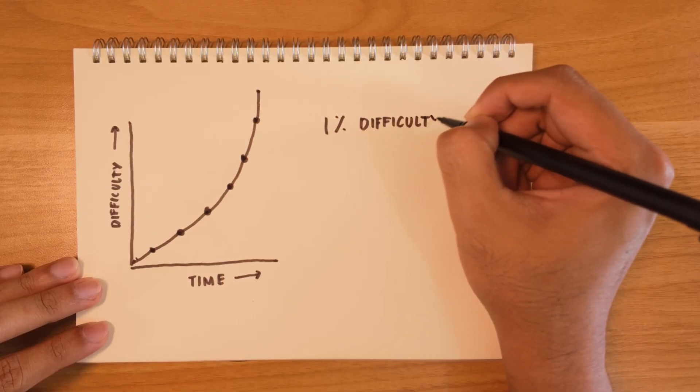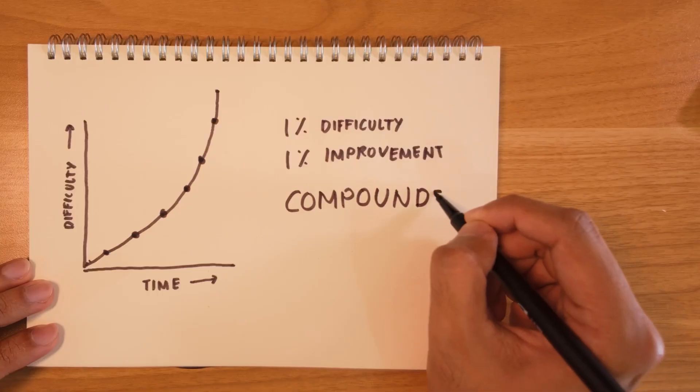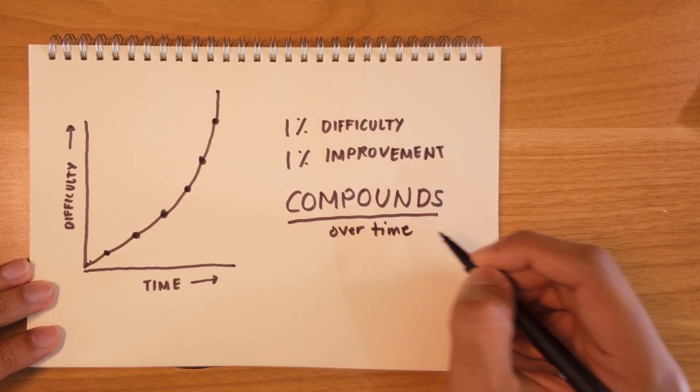You have to constantly challenge yourself to take on bigger and more challenging, more difficult projects to continuously build that confidence and mastery of the tools. When you implement this over a few years, you will look back and realize that what used to scare you is now very easy to do — what took 30 minutes before now only takes 5 minutes. My point really is 1% improvement, 1% difficulty. When you do it consistently, it really compounds over time. But all of this would only be possible if you put in the work. So take action and start learning today.